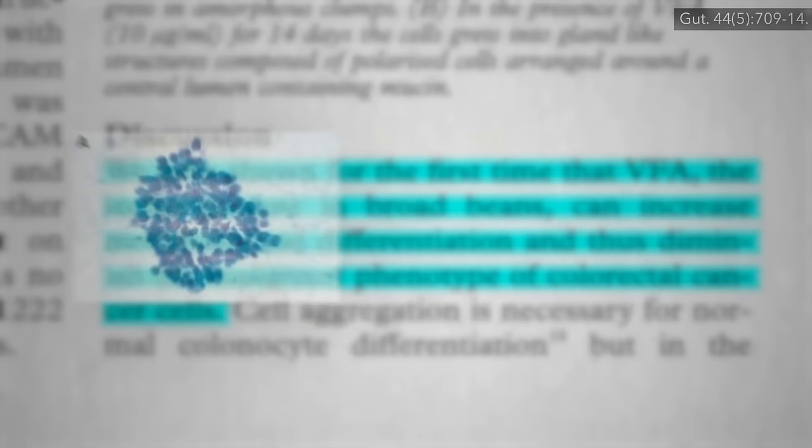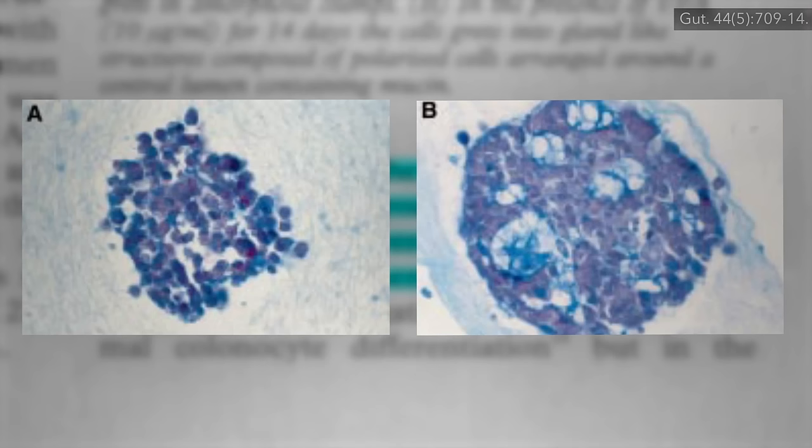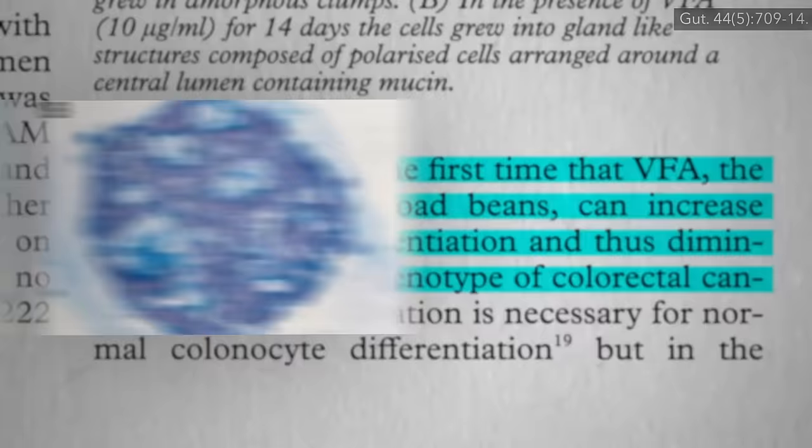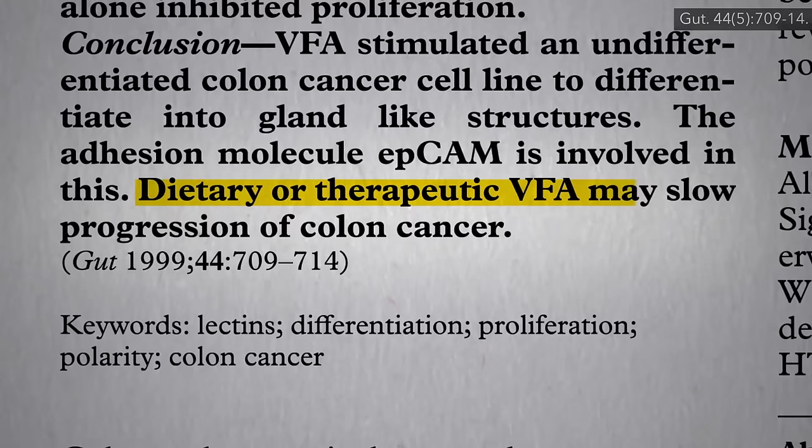Here's the before picture, cancer cells just growing in amorphous clumps, but then here's those same cancer cells after two weeks exposed to the fava bean lectins. The cells have started to go back to growing glandular structures like normal colon tissue.